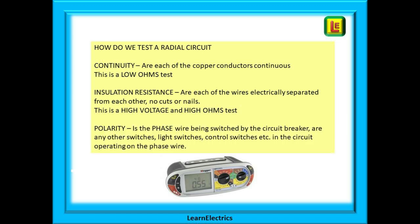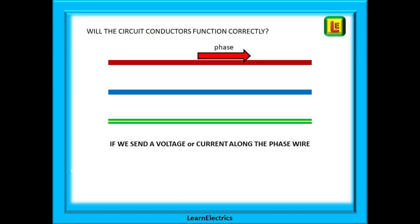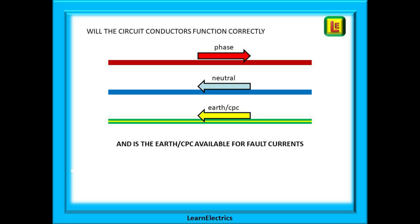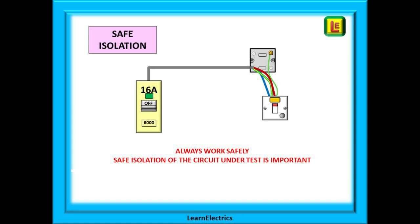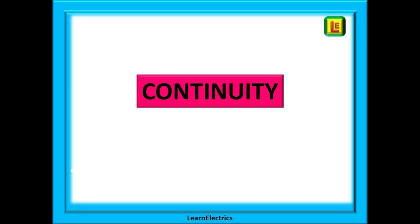And then there is the polarity test: is the phase wire being switched by the circuit breaker? Are any other switches — light switches, control switches — that are in the circuit operating on the phase wire? For the safety of the occupants we need to know that the phase is being switched. These basic tests will confirm that if we send a voltage or current along the phase wire it will come back along the neutral wire, and that the earth or CPC is there to carry any fault current and cause the fuse or breaker to disconnect the supply. When carrying out these dead tests the circuit must be de-energized — please ensure that you carry out the proper safe isolation procedure before beginning work.